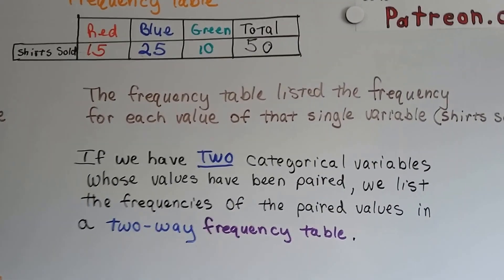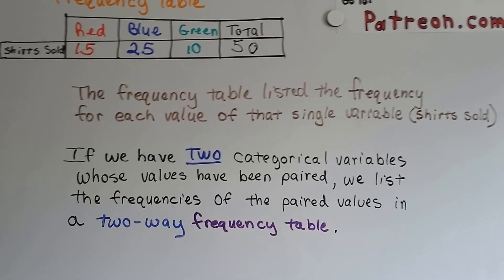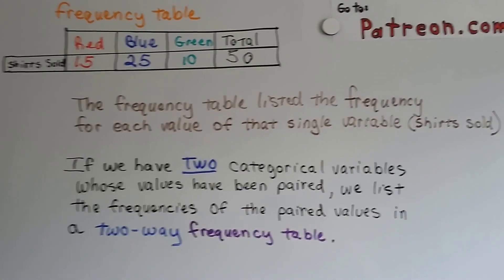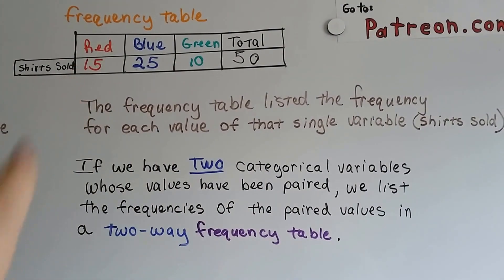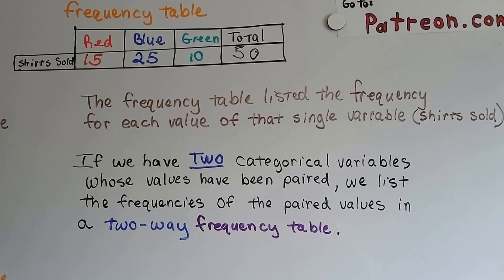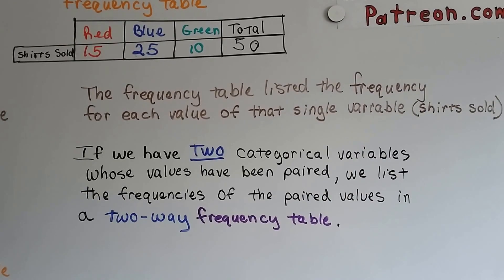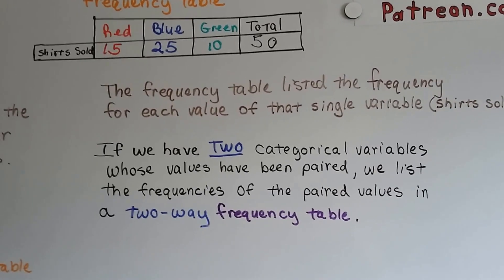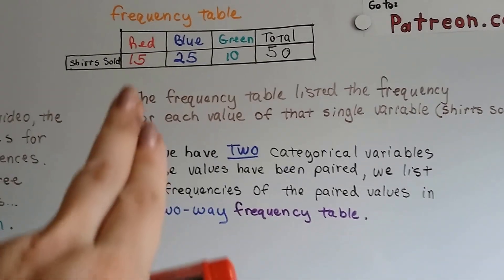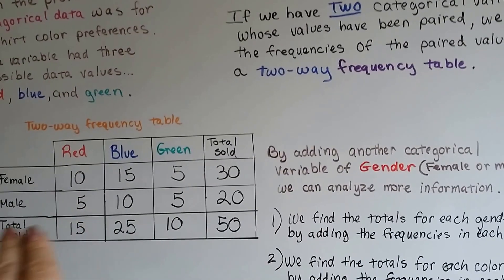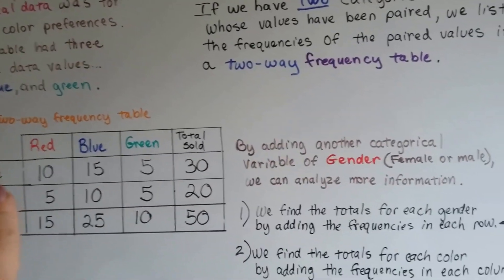So the frequency table listed the frequency of each value of that single variable shirt sold, the color. If we have two categorical variables whose values have been paired, we list the frequencies of the paired values in a two-way frequency table. So our table has grown from this to this because we added another category, male or female, the gender.